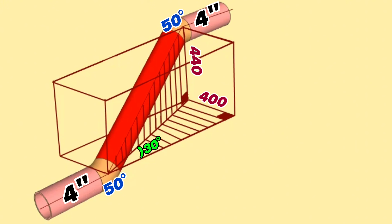Let's start the pipe tutorial video. In this video, we will explain with examples in the 4-inch pipeline how to calculate the distance between the centers of elbows cut at 50 degrees, how to calculate the center-to-end dimensions of elbows, and finally the calculation rule for the length of a piece of red color pipe in this pipeline.